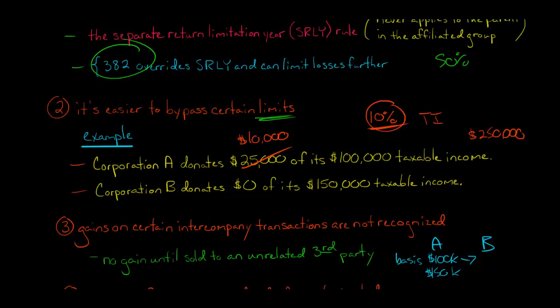Normally you think, there'd be a $50,000 gain, $150,000 minus $100,000. So then you'd say, we're going to incur some tax liability here. But when it's a consolidated return, when these are part of an affiliated group and they've elected to file a consolidated tax return, that gain is not going to be recognized.